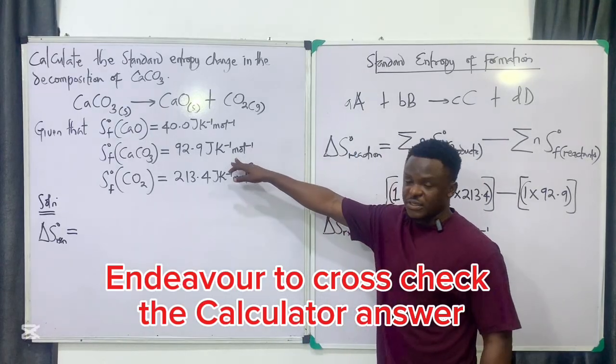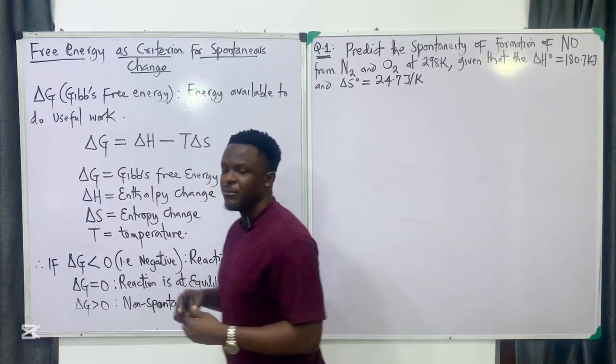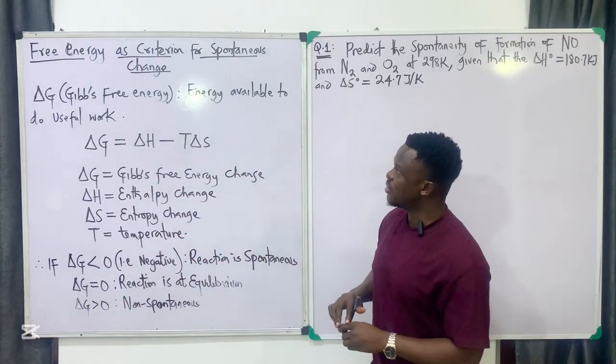The ΔS of the reaction gives us 161 joules per kelvin per mole. The unit is the same as what was given for the individual entropy values.